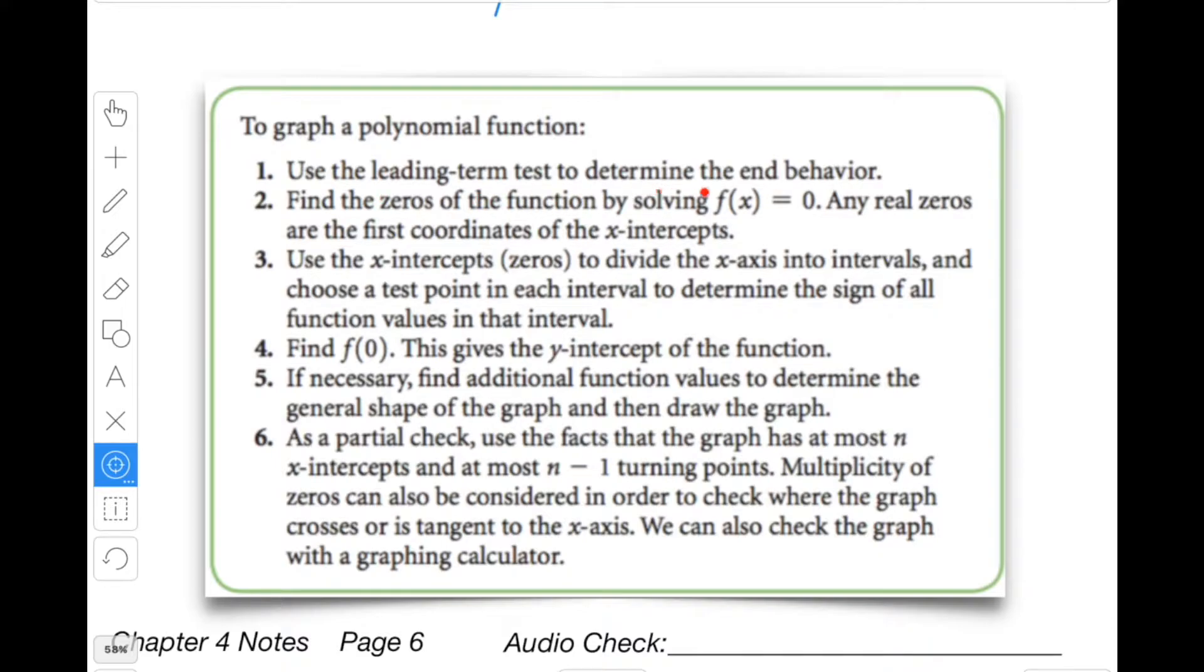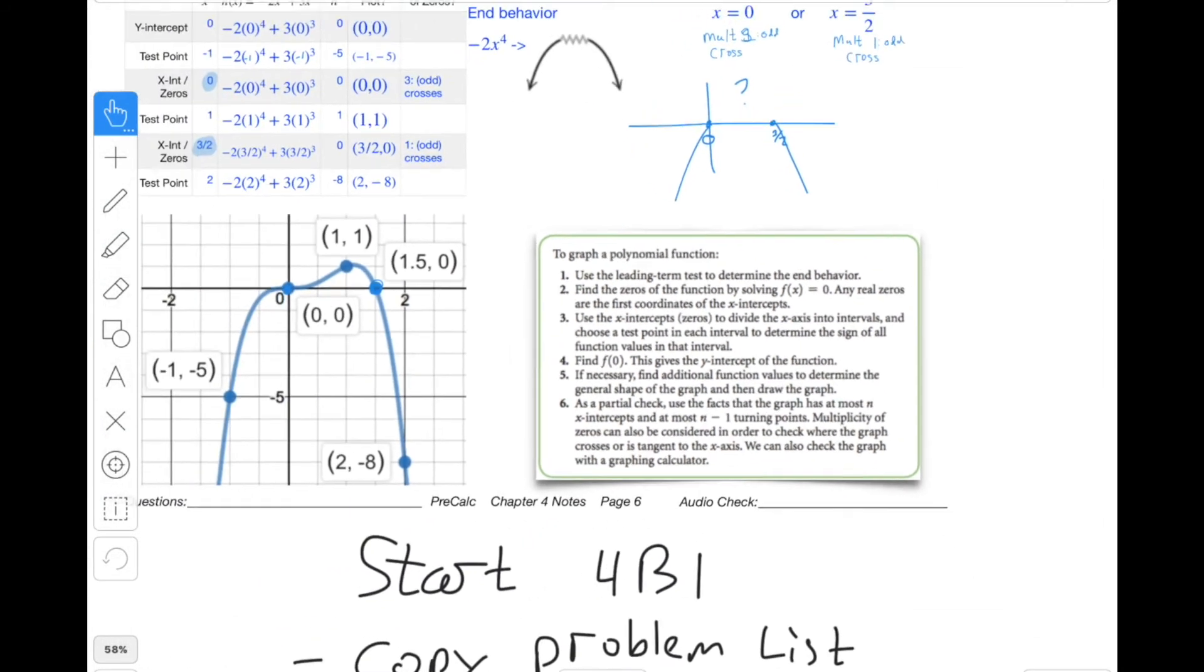You use the leading term test to determine end behavior. You find the zeros. You use the x-intercepts to divide the x-axis into intervals, and then you take test points. You can find f(0) to get the y-intercept. And if there's any other additional information you want, you can plot it. And as a partial check, use the facts that the graph has at most n x-intercepts and at most n minus 1 turning points. The multiplicity of the zeros can be considered in order to check where the graph crosses or is tangent to the x-axis. And at the very bottom it says you can also check the graph with a graphing calculator, which I think is a really good idea to do, but not until you've actually tried it on your own.